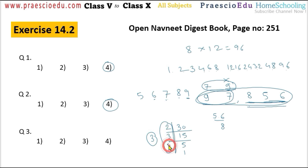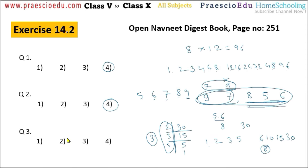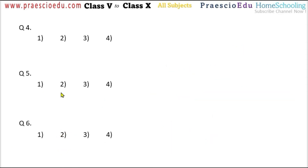For 130, all factors are: 1 and 130, 2 and 65, 3 and... wait — 3 is not a factor; then 5 and 26, 6... then 10 and 13. Counting: 1, 2, 3, 4, 5, 6, 7, 8 — so there are 8 factors. The difference is 8 minus 3 equals 5, and 5 is given in option number 2.